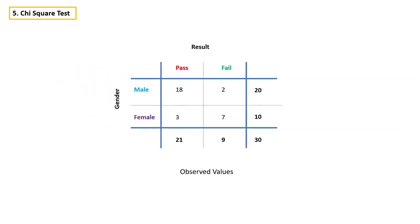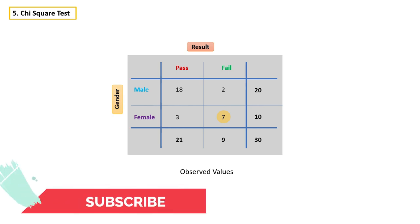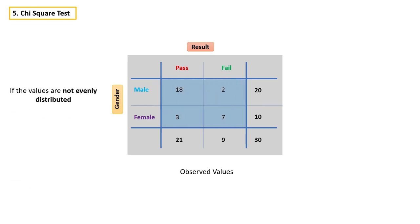Now let's focus on the observed values. By looking at this table, we can confidently say that there is a relationship between gender and result, because male students are more likely to get a pass mark whereas female students are more likely to get a fail mark. Obviously, we can say gender makes a difference in results. But how are we able to say that? Because the values are not evenly distributed — that is why we can say there is a relationship between gender and result.